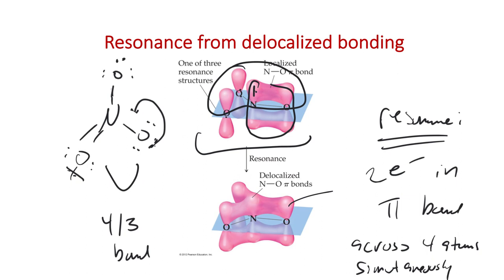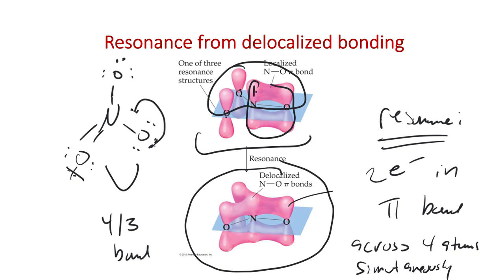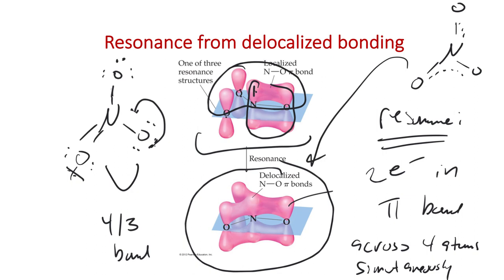Resonance means the electrons are resonating — being at all those locations at the same time through one delocalized orbital. This sketch shows what the orbital picture looks like for the resonance hybrid structure. Delocalized bonding is just the nature of the orbital interactions in these molecules, which we can understand from hybrid orbital theory.